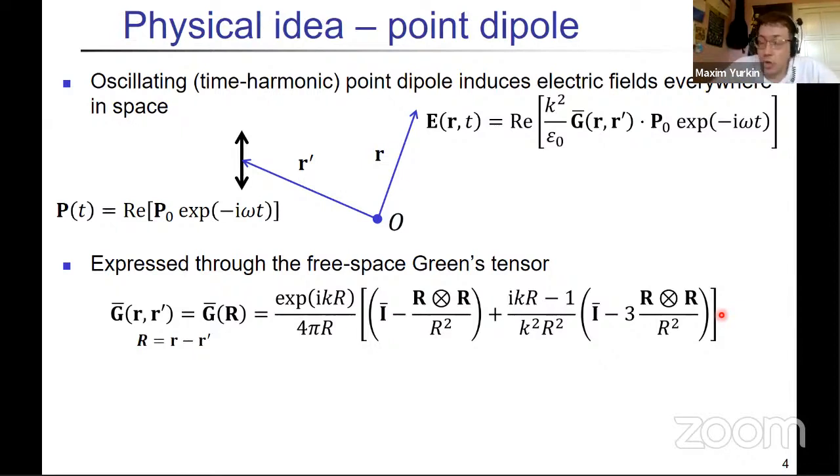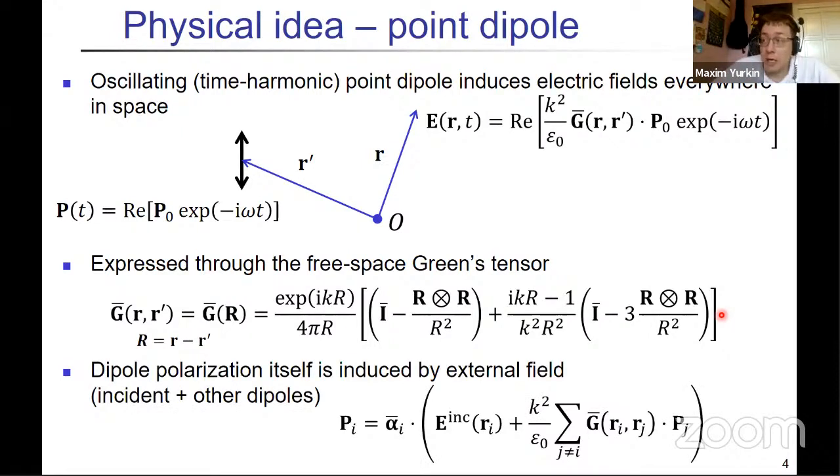So you have one dipole, you know how it interacts with the incident field, and then if you consider several dipoles or a lot of dipoles, then basically each dipole senses a field which is incident field plus the field of all other dipoles. And if you multiply it by polarizability, which in the picture of point dipole is just some phenomenological constant, then you know the dipole moment. So basically, if you look at this, you see a system of equations for known dipole polarization, P_i, and that's basically it.